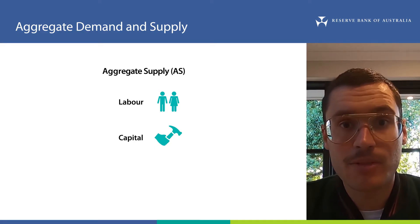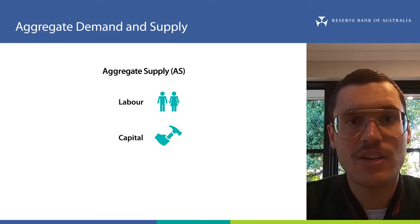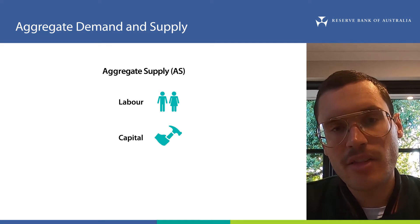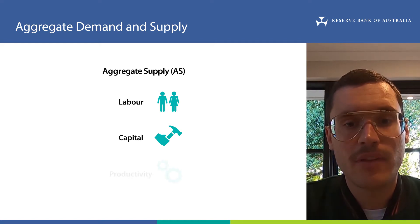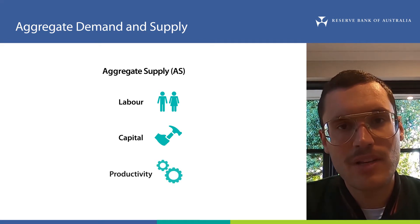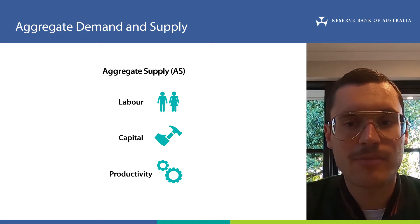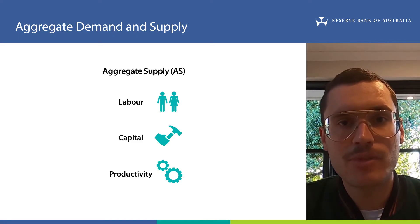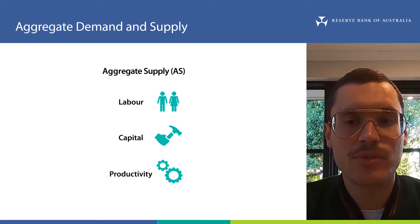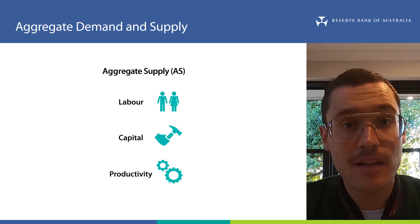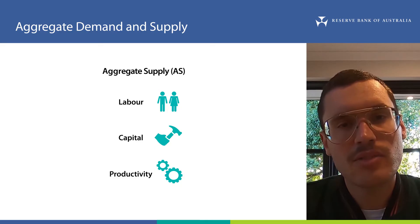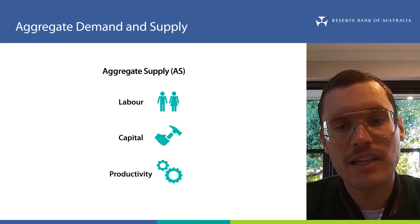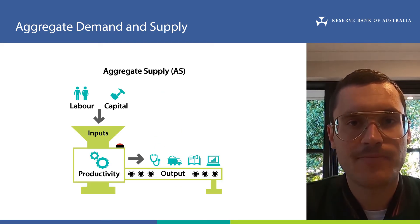For example, I'm using a laptop to produce this video. There's a third aspect of aggregate supply called productivity. Productivity captures everything else apart from labour and capital that's involved in turning inputs into outputs. It's any inputs that we can't measure, such as innovation, and it's also how efficiently inputs are turned into outputs.